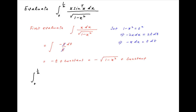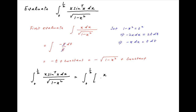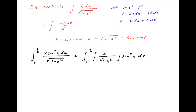Now we go back to the given integral from 0 to 1/2 of x sin inverse x dx upon square root of 1 minus x squared. The integrand can be broken into two components: the first component is x upon square root of 1 minus x squared, multiplied with sin inverse x. Now we integrate by parts.